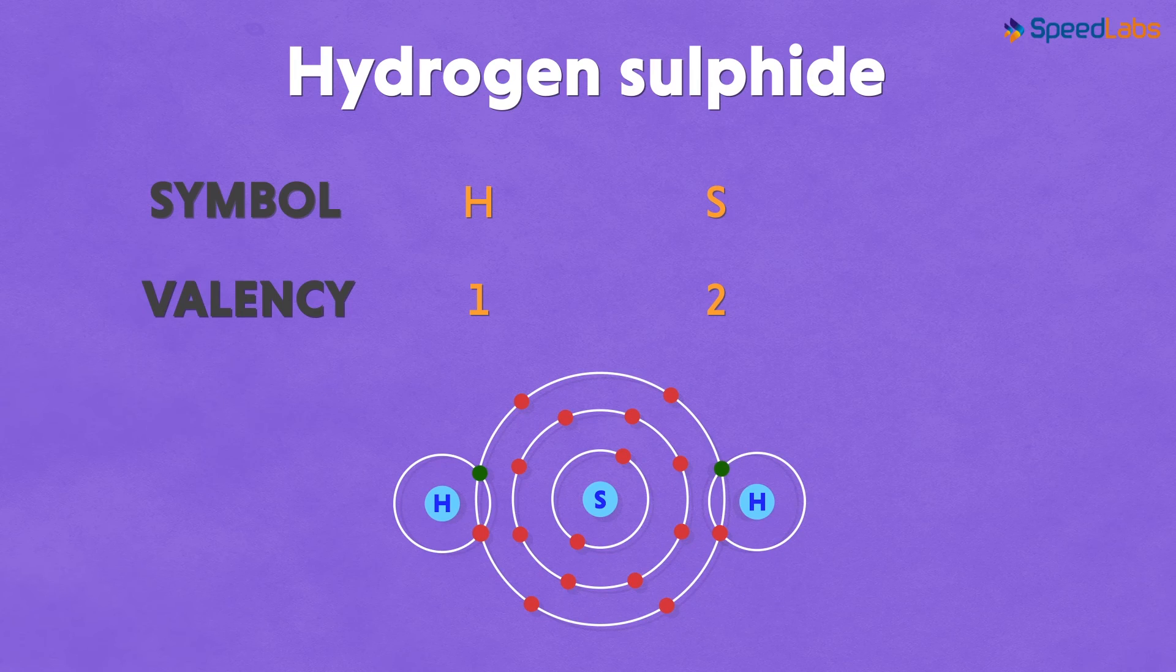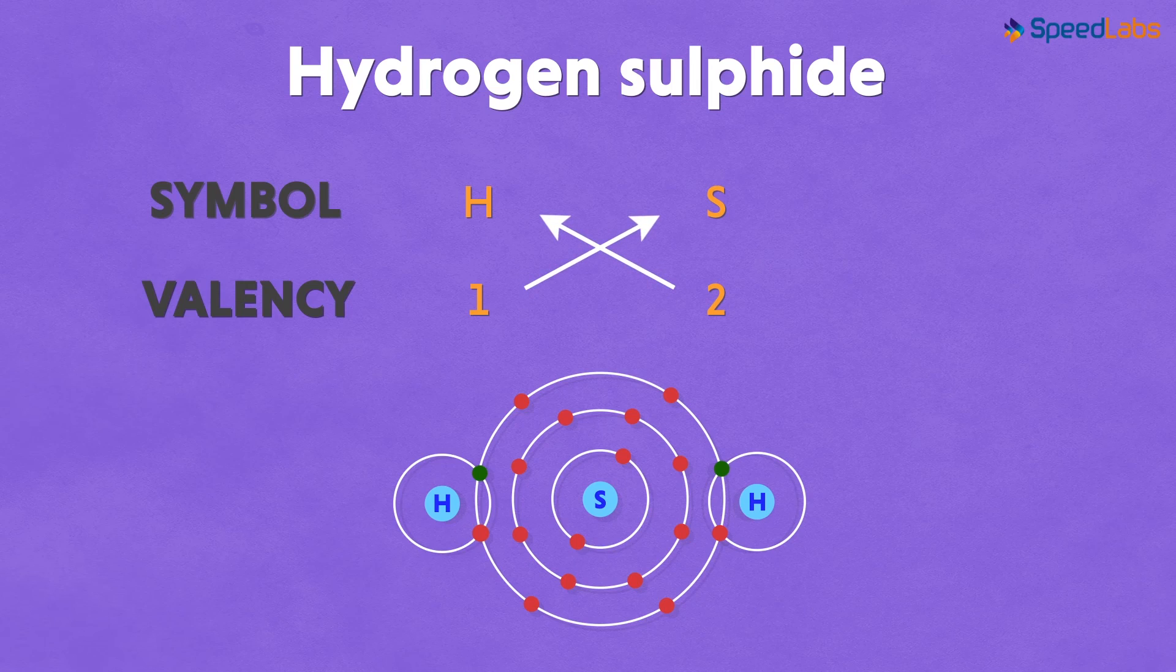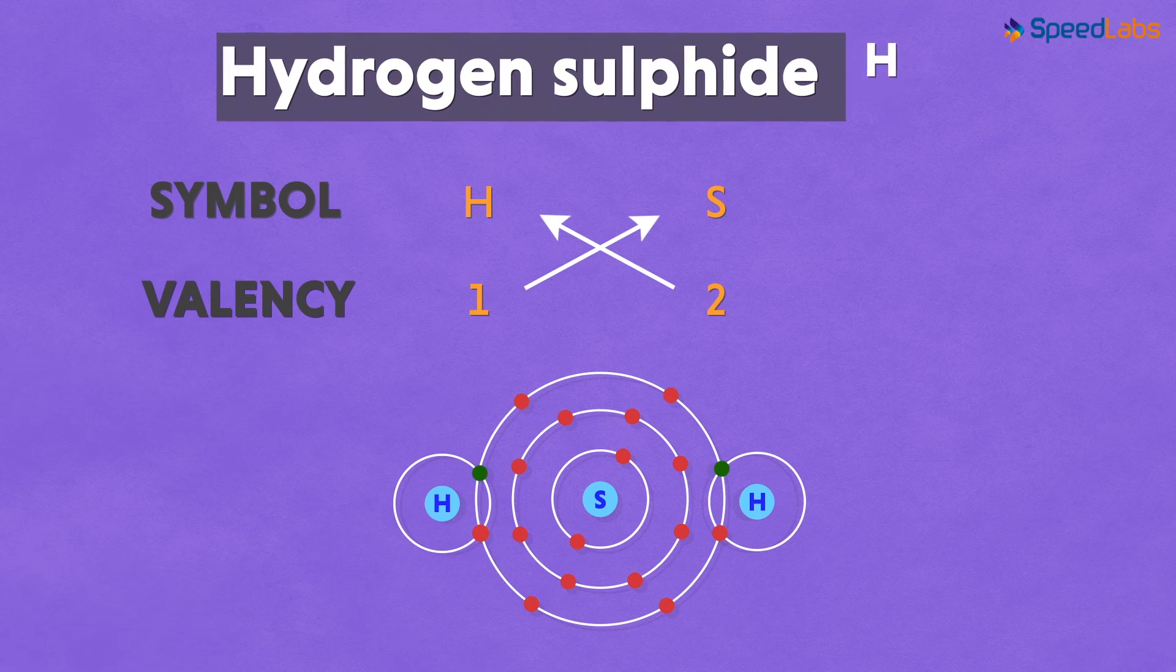So in order to balance the valencies and get no net charge on the molecule, we need two hydrogen atoms to bind with one Sulphur atom. That is why we get the formulae of hydrogen sulphide as H2S.